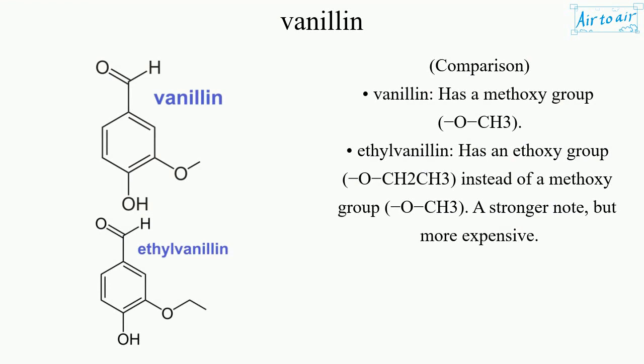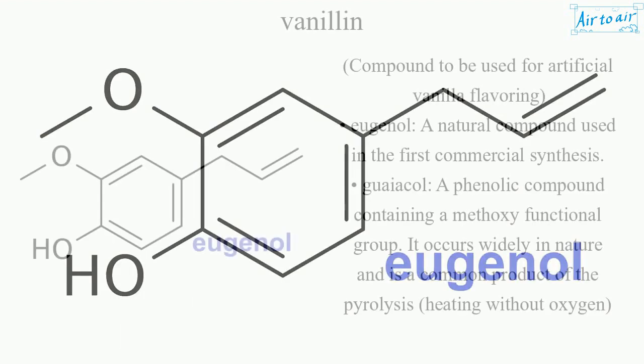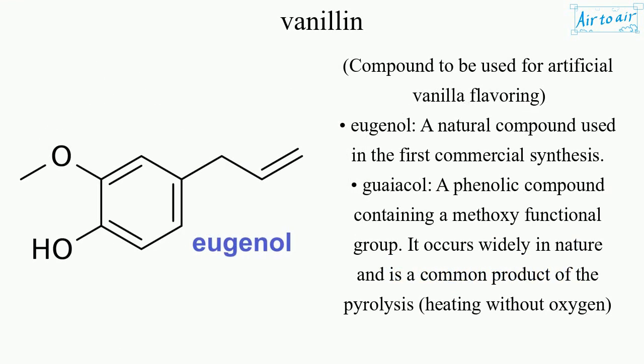Comparison: Vanillin has a methoxy group (–O–CH3), while ethylvanillin has an ethoxy group (–O–CH2CH3) instead of a methoxy group. Ethylvanillin has a stronger note but is more expensive, and is the compound used for artificial vanilla flavoring.